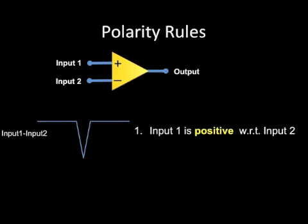Similarly, by convention, if there is a downward deflection, input 1 is positive with respect to input 2, or conversely, input 2 is negative with respect to input 1.